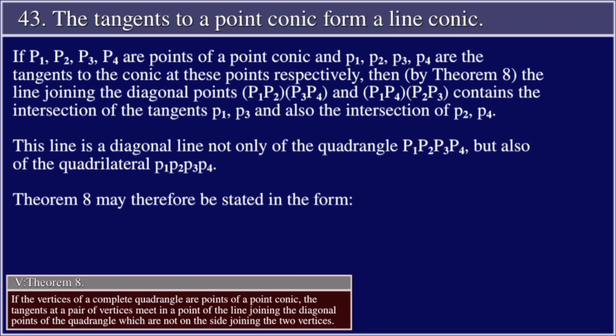If P₁, P₂, P₃, P₄ are points of a point conic, and p₁, p₂, p₃, p₄ are tangents to the conic at these points respectively, then by Theorem 8, the line joining the diagonal points (P₁P₂, P₃P₄) and (P₁P₄, P₂P₃) contains the intersection of the tangents p₁, p₃ and also the intersection of p₂, p₄.